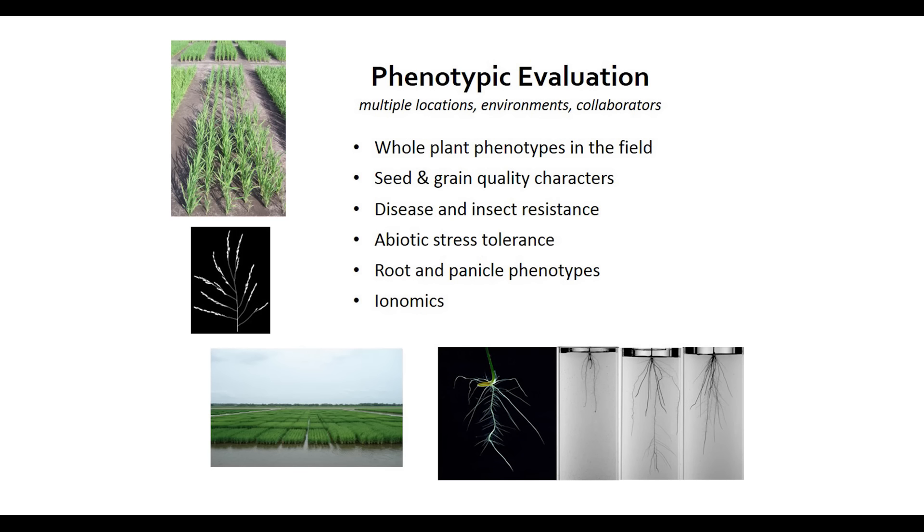Those different subpopulations are very important for a genome-wide association study because we have to control for kinship relationships — essentially, things that are more closely related to each other than they are to other things in our germplasm collection. Once we understand the population structure, we then work with people from different parts of the world interested in a variety of different traits and phenotypes. The germplasm is sent to them, they undertake different types of phenotypic analysis, and the phenotypes can then be associated with the genotypes we've already analyzed to identify which regions of the genome contain genes that contribute to the phenotypic variation many people are interested in.